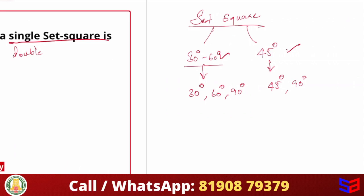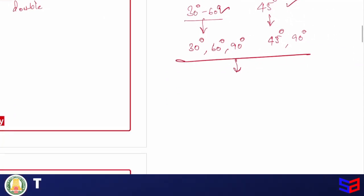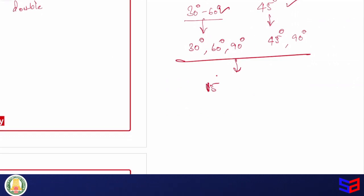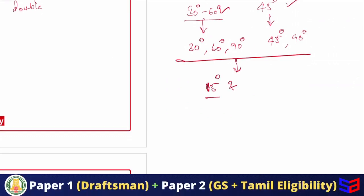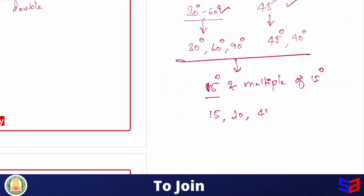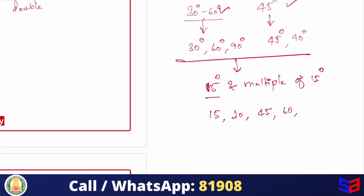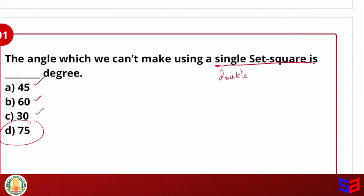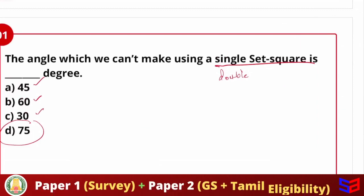We can make all angles that are multiples of 15 degrees — for example, 15, 30, 45, 60, 75, 90, and so on. So the first question is about single square or double square. Even 75 degrees we can make using a set square.